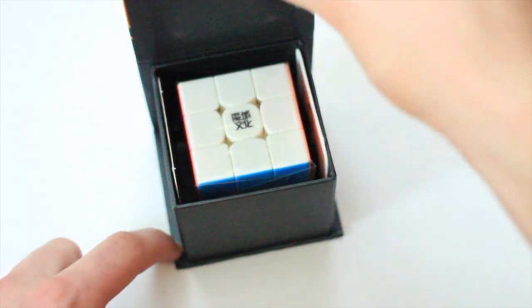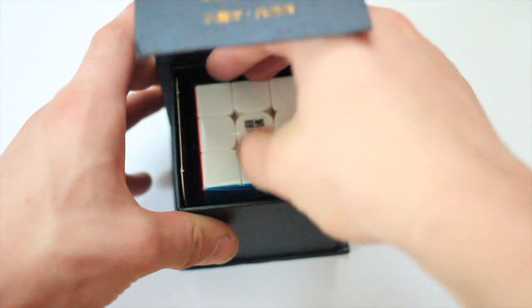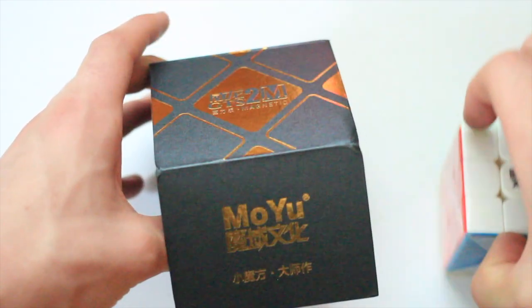Let's crack this open. Oh, that magnetic box is pretty cool. We'll just pull this cube out here. In here, we're also given a Moyu magnetic card as well as a team Moyu card.